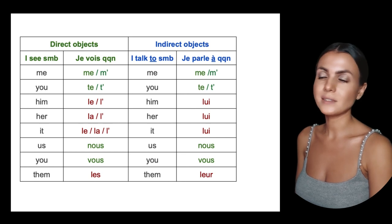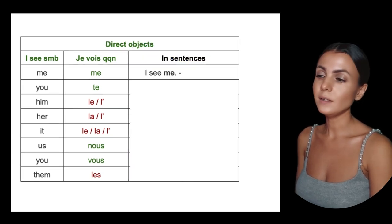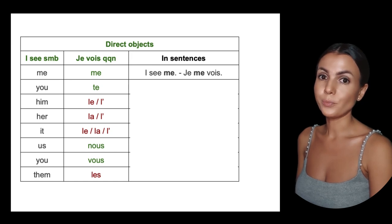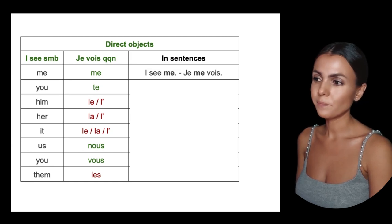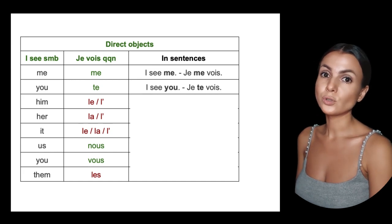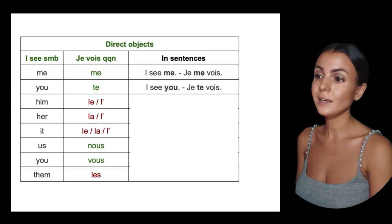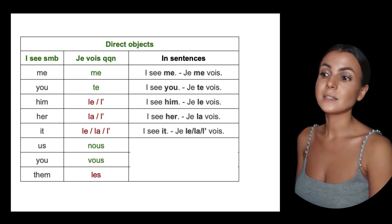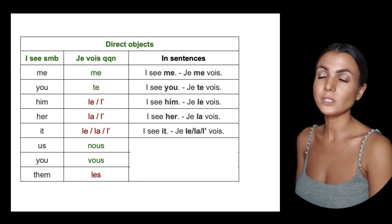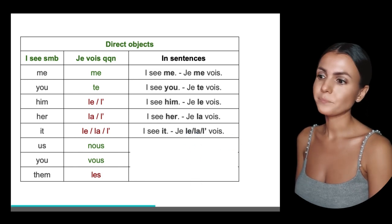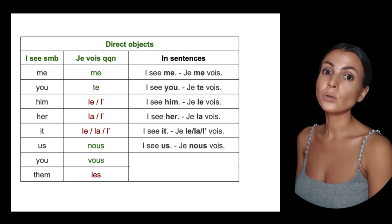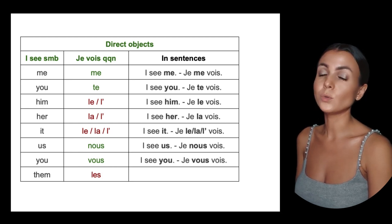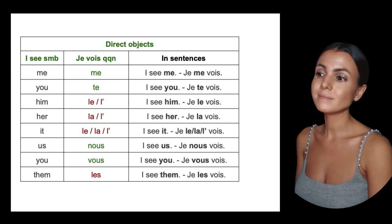In French, pronouns go before the verb. So: I see me — je me vois; I see you — je te vois; I see him — je le vois; I see her — je la vois; use l'apostrophe depending on the following word. I see us — je nous vois; I see you — je vous vois; I see them — je les vois.